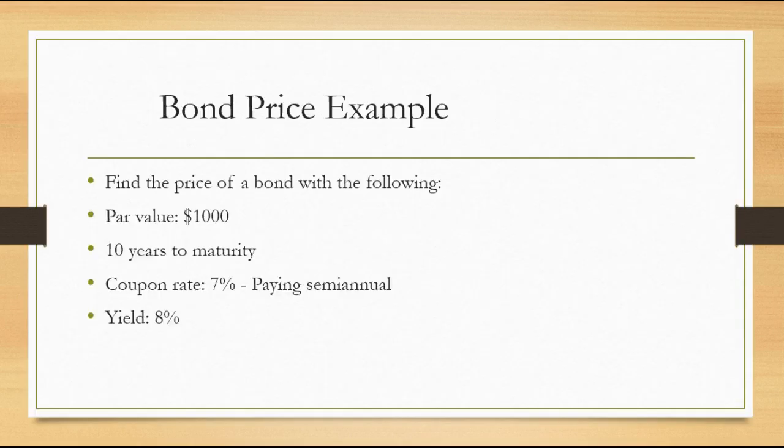So let's jump right into it. Here's our example for our bond price. We have a $1,000 par value bond, 10 years to maturity, the coupon rate is 7% which pays semi-annually, and the yield on the bond is 8%.